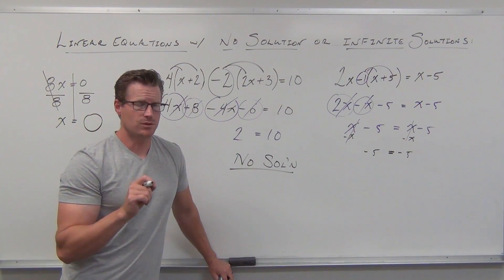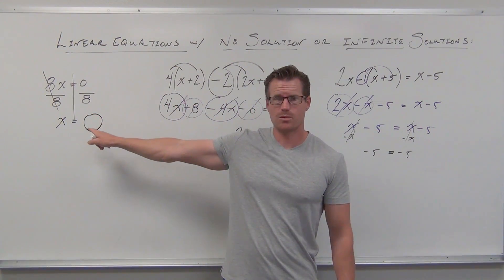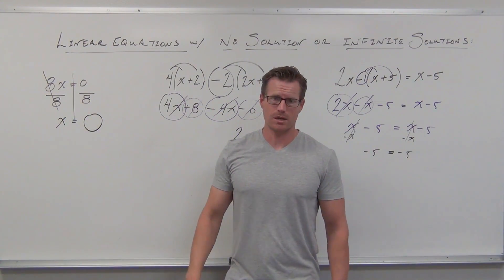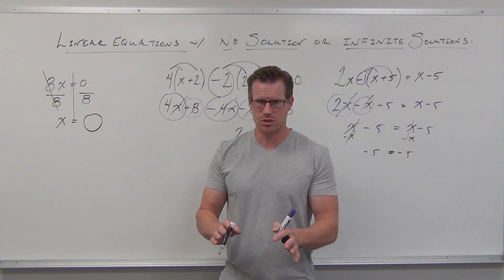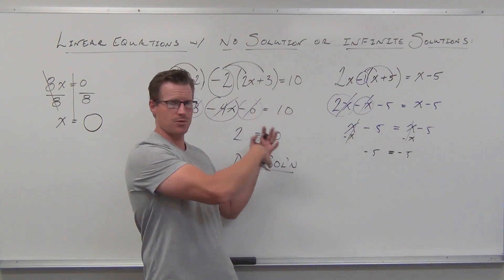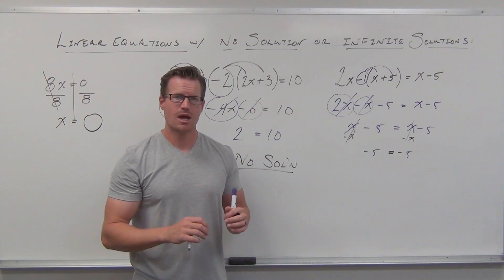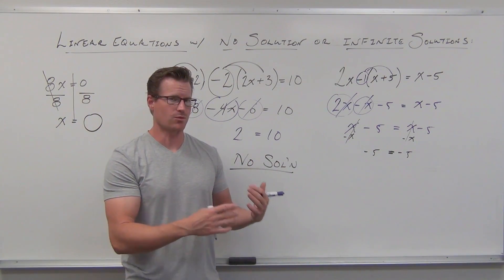Please make a mental note here. If you don't get rid of your variable completely, you have a solution no matter what it looks like. If you have a variable still in a linear equation, it's got a solution. Only when you completely eliminate the variable through your simplification, or through getting rid of a variable on both sides, that is when you have these two cases: no solution or infinite solutions. That's why they're rare.